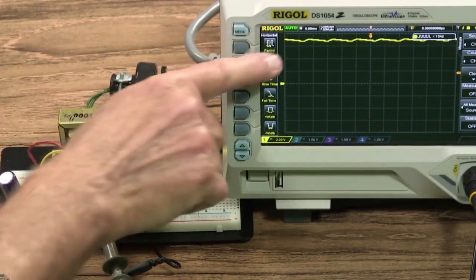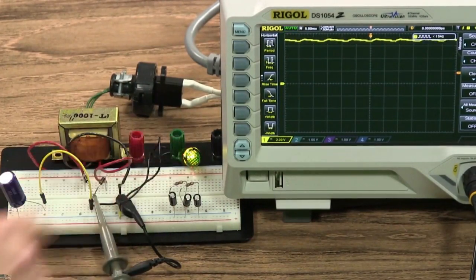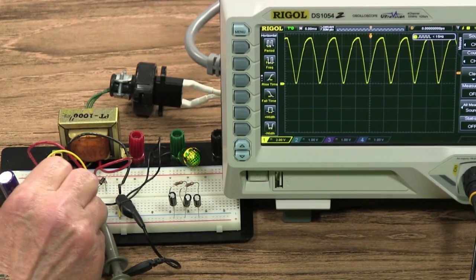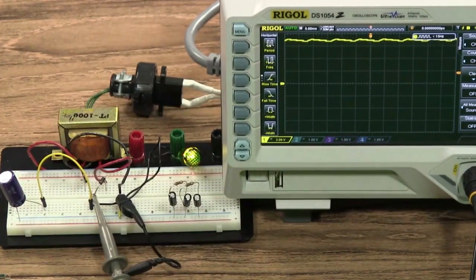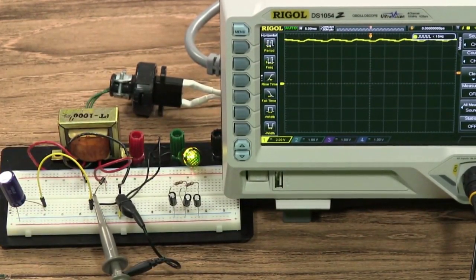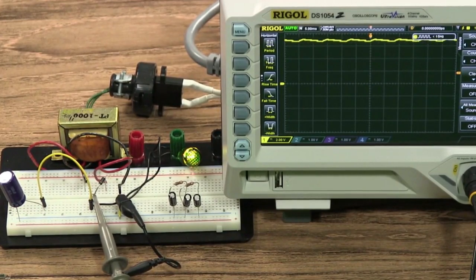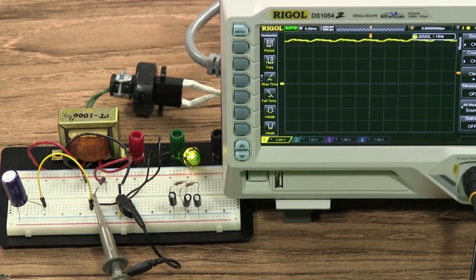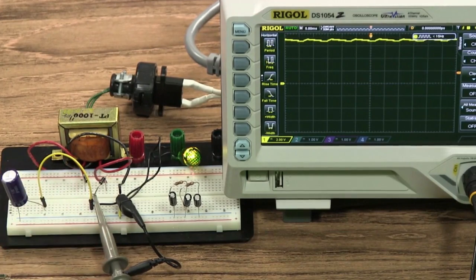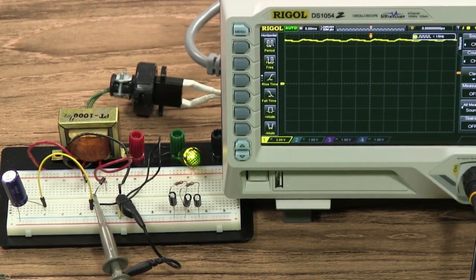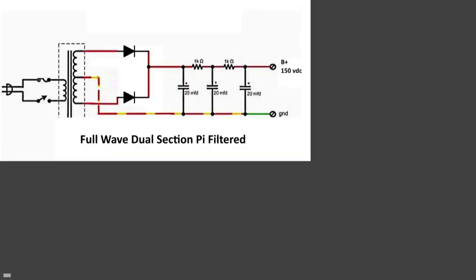But it's much closer to DC than what we had previously. It is DC. It just has ripple riding on it. You notice also on the light bulb I've got connected there, that light bulb gets brighter when we've got it filtered, and we've smoothed out that waveform to pretty much just straight DC. And this is a 1,000 microfarad capacitor I've got connected across it here. So you might say, why don't we just use a 1,000 microfarad capacitor? Why do we need to use the three 20 microfarad capacitors and the two 1K ohm resistors there to make up the dual pi network?